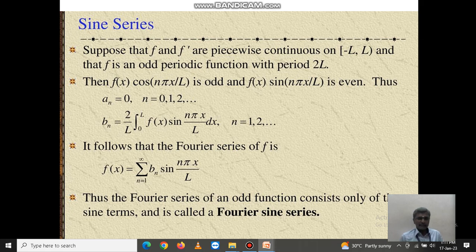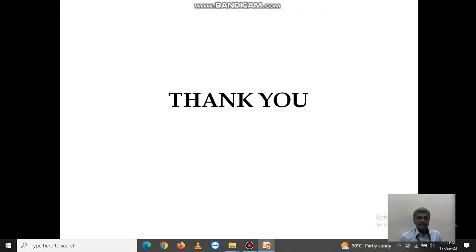The Fourier series of f is f(x) equals summation n equals 1 to infinity of bn sin(n pi x over l). Here a0 and an both are 0, so this is called sine series. Thank you.